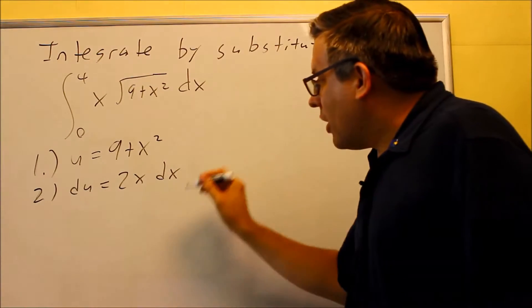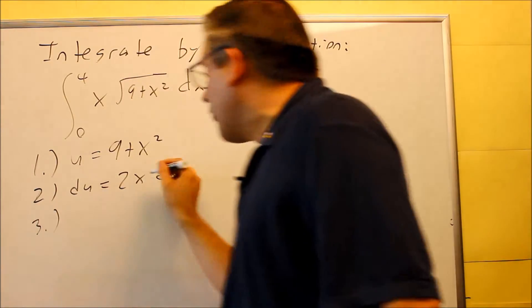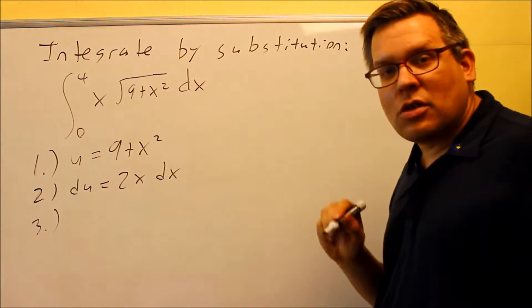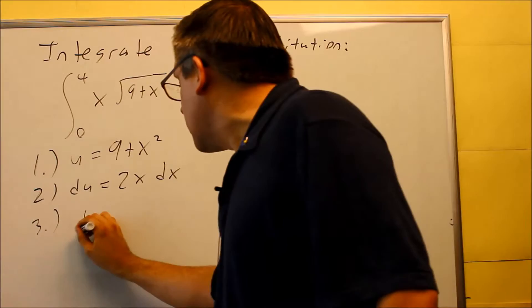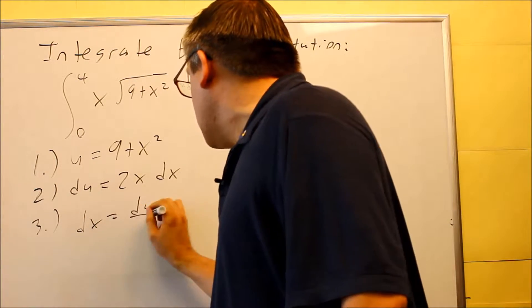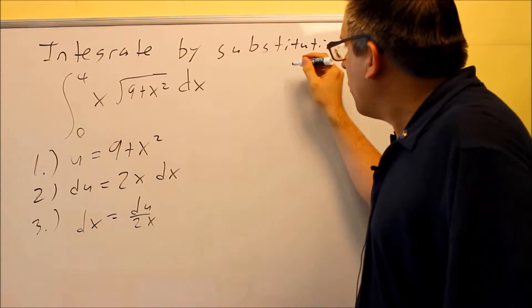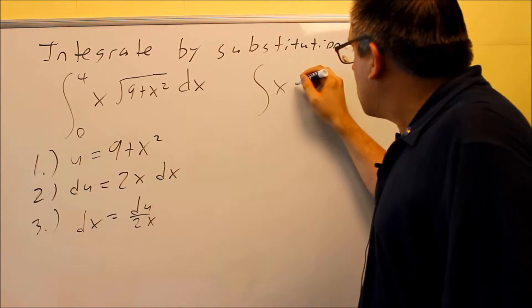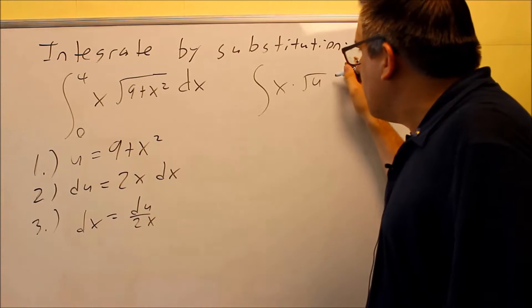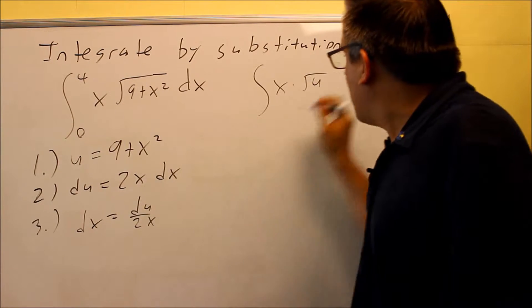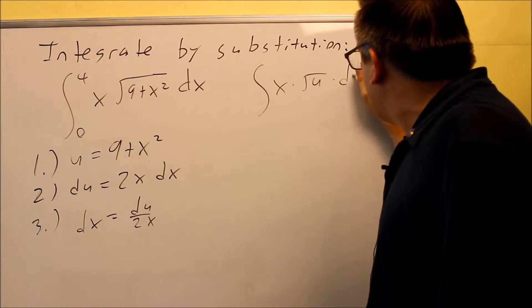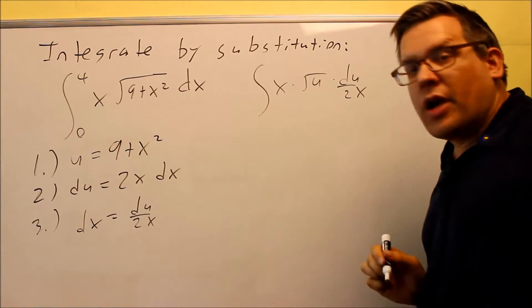And then for step three, you're going to solve for dx and substitute it back into the integral. So when we solve for this, your dx is equal to du over 2x. Now we'll come over here and we'll work with this. You have x and then you're going to put in the square root of u, because that's our inside part there, and then instead of dx we do du over 2x.